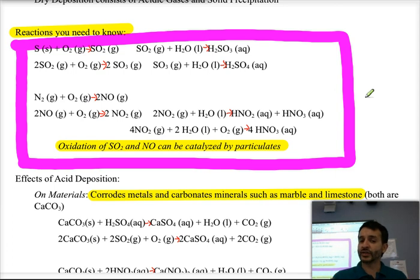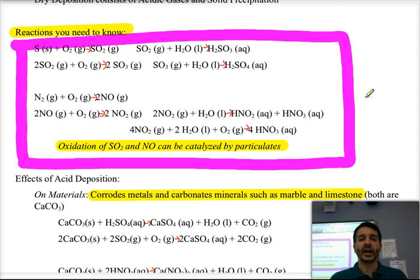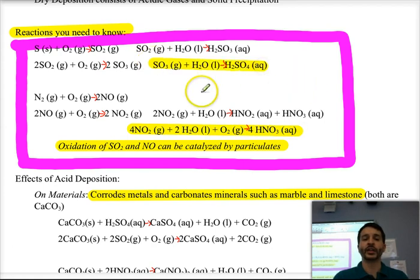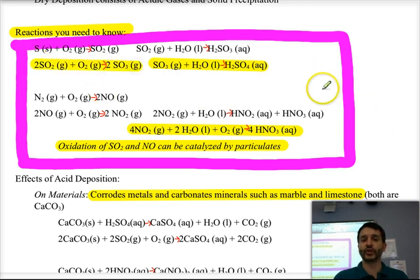Similarly, nitrogen dioxide can react with water and more oxygen to form large quantities of nitric acid. These key reaction equations are important to know — particularly the ones forming nitric acid from NO2 and those forming sulfuric acid from SO2.